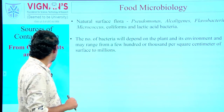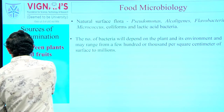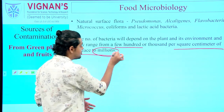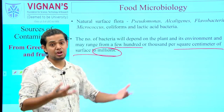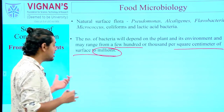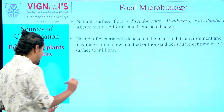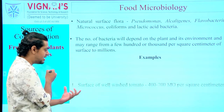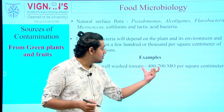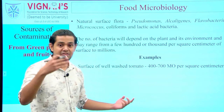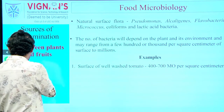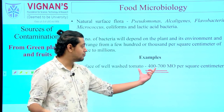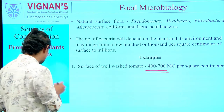The number of bacteria present on the surface of raw materials depends on how they are kept, grown, and stored — environmental factors define the range of microbial load. The number can vary anywhere from a few hundreds to millions per square meter. For example, the surface of a well-washed tomato still contains 400 to 700 microorganisms per square centimeter.